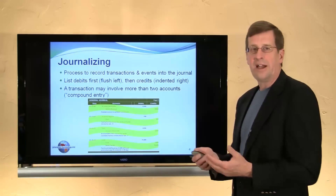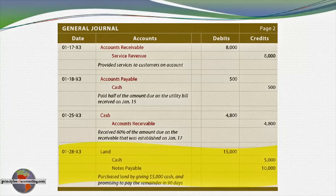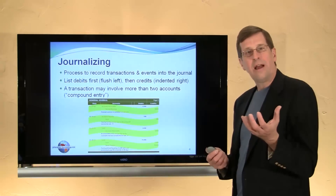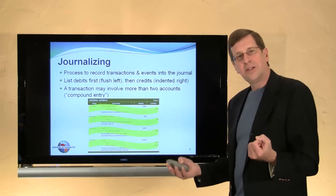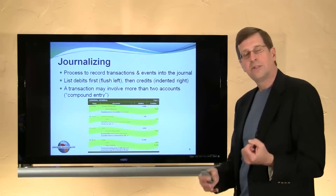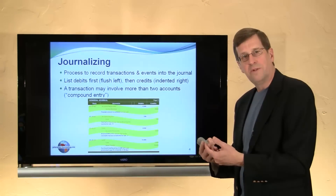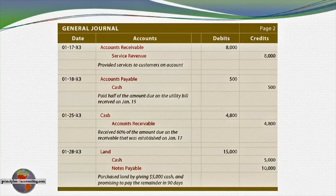Let's look at this last transaction — it is a compound journal entry because three accounts are affected. We bought land, making a $5,000 down payment and agreeing to pay $10,000 later. We bought a $15,000 asset, so our land account goes up and is debited $15,000. We're giving up $5,000 cash — an asset going down — thus credited $5,000. We also have a liability to pay in the future increased by $10,000, hence the credit to notes payable. The debits equal credits. It's a brilliant system that captures every transaction in a self-balancing way.